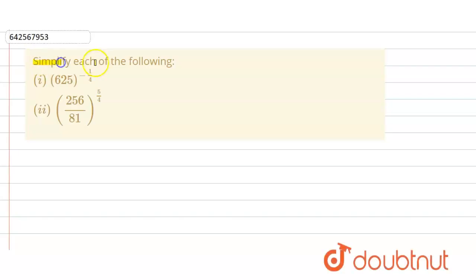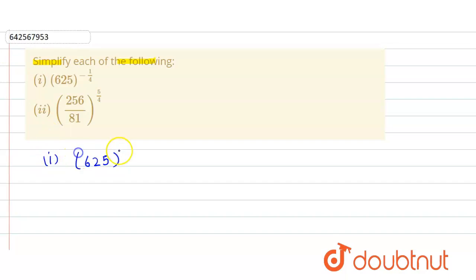In the given question, we have to simplify each of the following numeric expressions. So here in the first part, the expression is 625 raised to power minus 1 by 4.